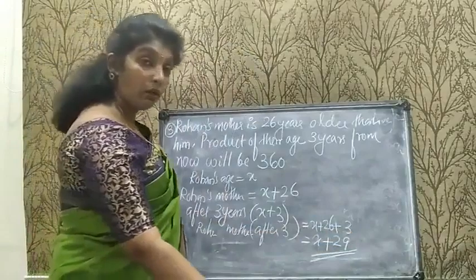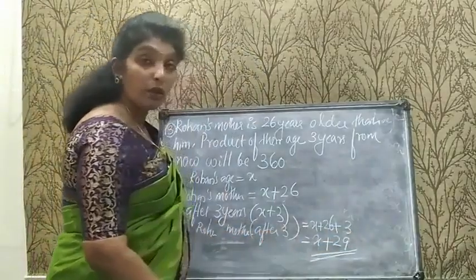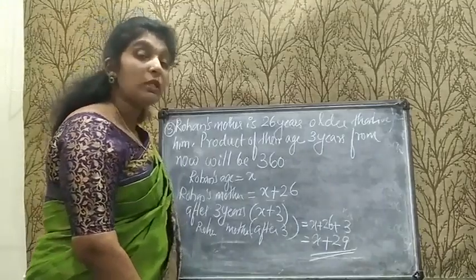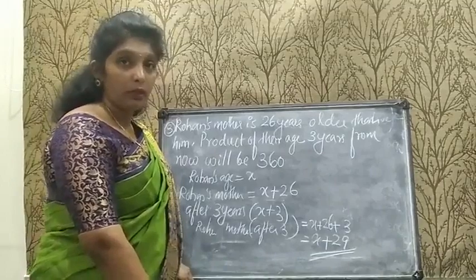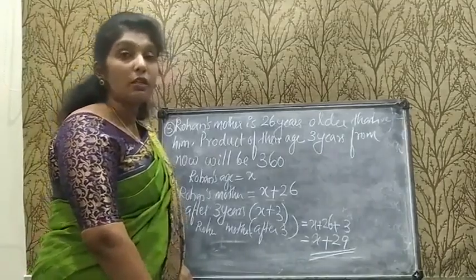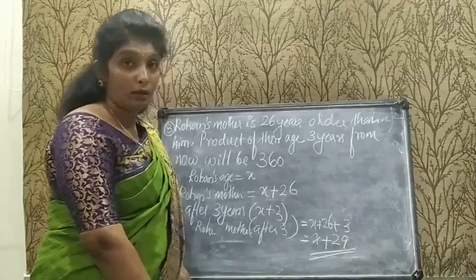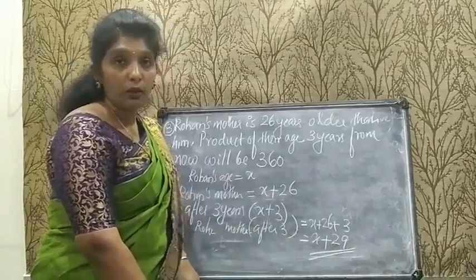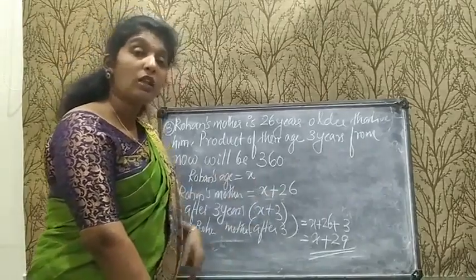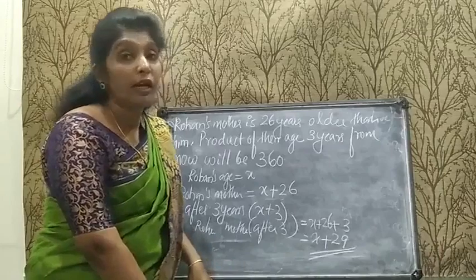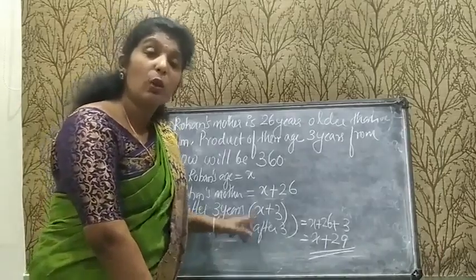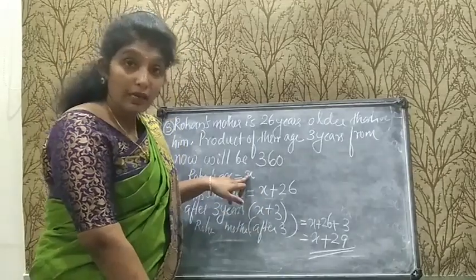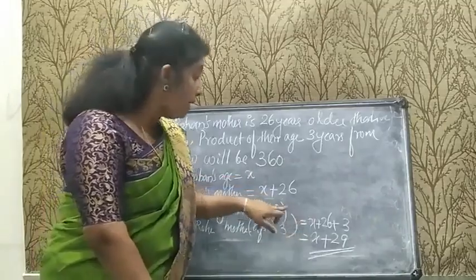Let me repeat: Rohan's present age is x and his mother is 26 years older, so mother's age is x + 26. After 3 years, both ages increase by 3. Rohan's age after 3 years: x + 3. Mother's age after 3 years: x + 26 + 3 = x + 29.